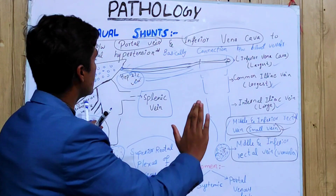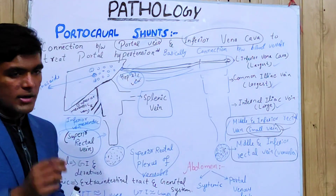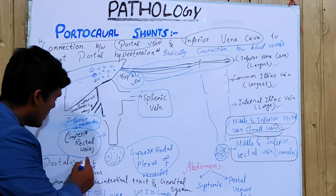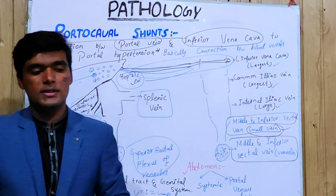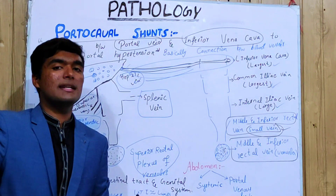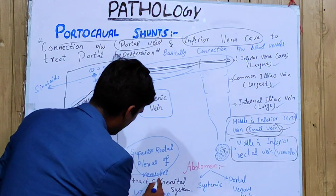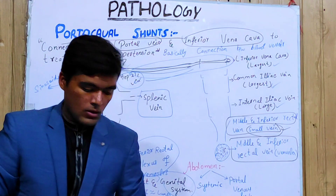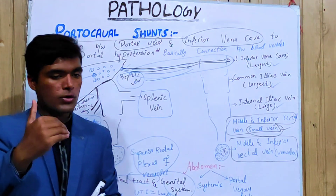Returning to our original topic: one important point is that the portal system is basically for the supply of the gastrointestinal tract and its derivatives, while the systemic system is basically for extraintestinal supply, which includes structures like the genital system.